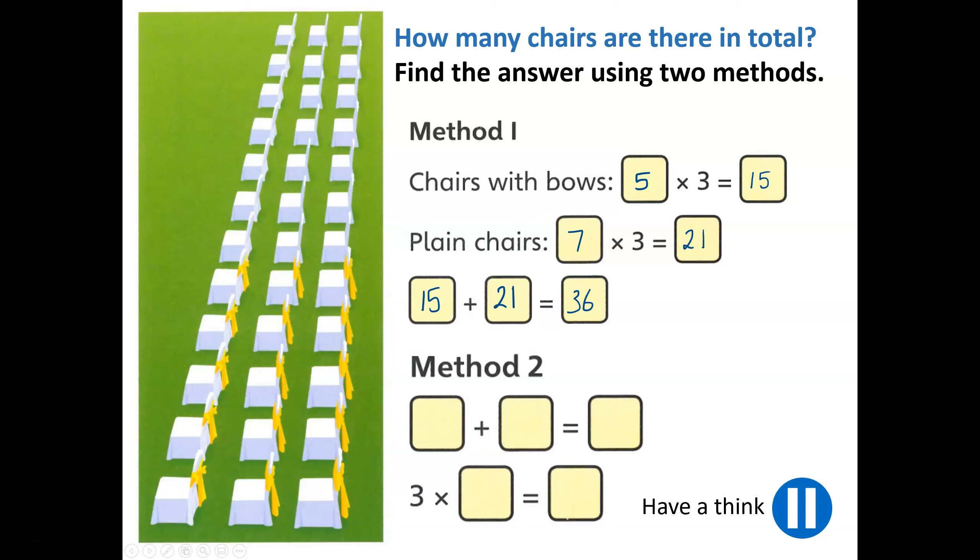Let's look and see how we would solve the problem using the second method. We are being asked to add two numbers together and then multiply it by three, the total number of chairs in each row. 5 add 7 is equal to 12. This tells us there are twelve rows altogether, so 3 times 12 is equal to 36.